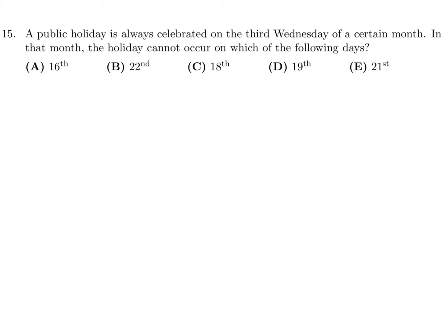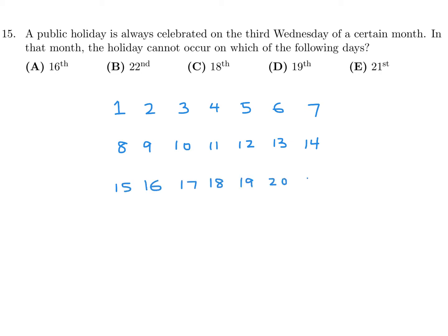A public holiday is always celebrated on the third Wednesday of a certain month. In that month, the holiday cannot occur on which of the following days? Let's just make a little calendar: 1, 2... 8, 9, 10, 11, 12, 13, 14, 15, 16, 17, 18, 19, 20, 21. I'm going to go only up to 22 because I think the largest possible date is 22.